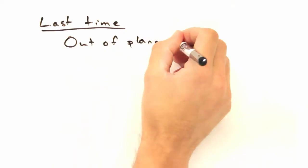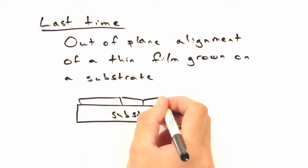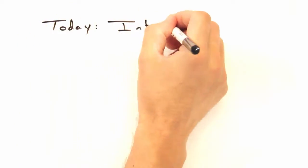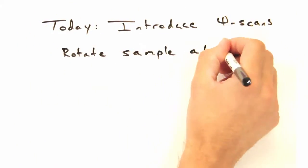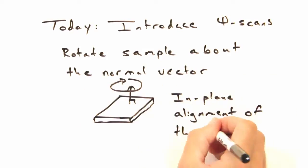Last time, we took a look at how to determine the out-of-plane alignment for a thin film grown on a substrate. The goal today is to introduce phi scans, which rotate the sample about its normal and allow us to probe the in-plane alignment of the film.